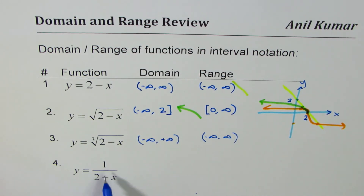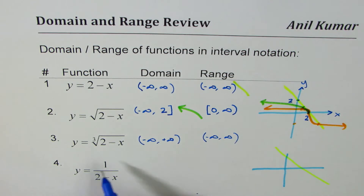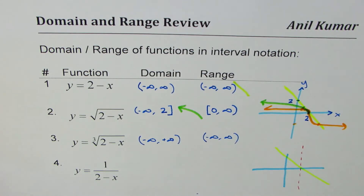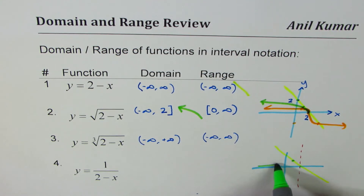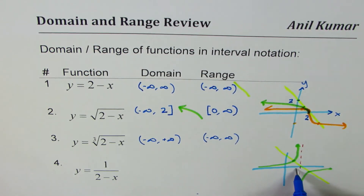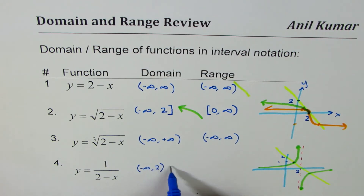Now let's sketch y = 1/(2 - x) and find its domain and range. Starting from the graph of y = 2 - x, the reciprocal of 0 is undefined, so we have a vertical asymptote at x = 2. The reciprocal of 1 is 1, and the reciprocal of positive numbers is positive while the reciprocal of negative numbers is negative. The domain is (-∞, 2) ∪ (2, +∞).